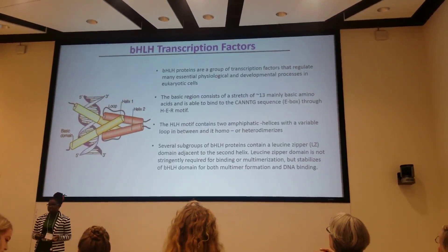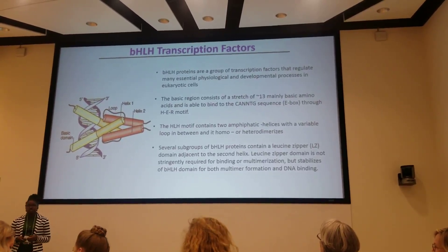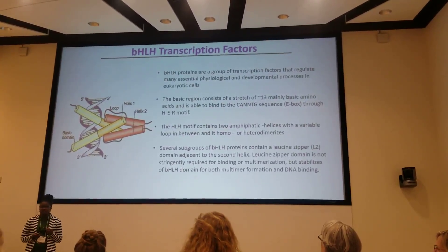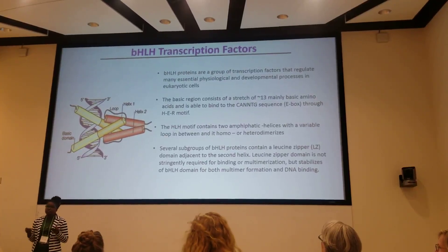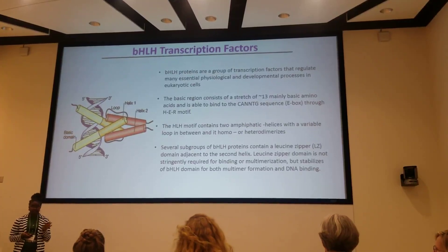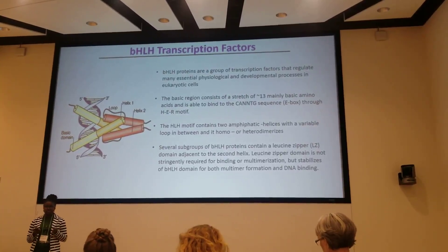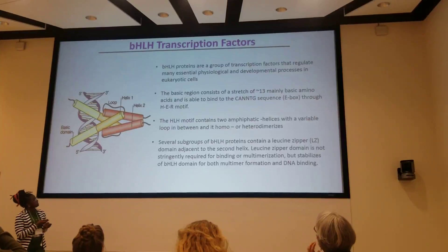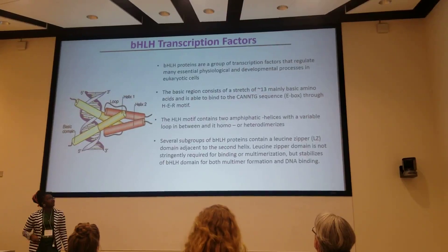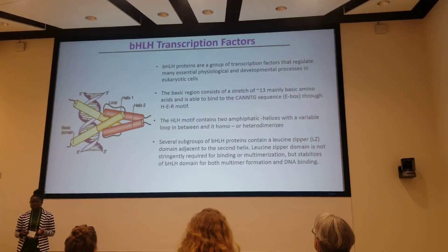I'd like to start with a basic overview of bHLH transcription factors. bHLH transcription factors are among the largest family of transcription factors in eukaryotic cells. They have the characteristic structure of a basic region containing basic amino acids, and an HLH motif consisting of two amphipathic helices connected by a loop. The basic region is able to bind to the E-box sequence, which is the canonical CANNTG sequence, and the HLH motif participates in multimerization.